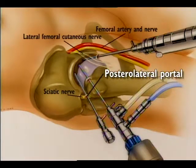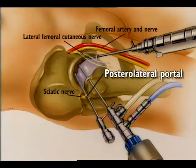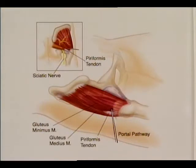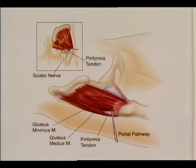The posterior lateral portal passes above the posterior border of the greater trochanter. The portal penetrates the gluteus medius and minimus, entering the lateral capsule at its posterior margin, superior and anterior to the piriformis tendon. It is closest to the sciatic nerve at the capsule, with an average distance of 2.9 cm.